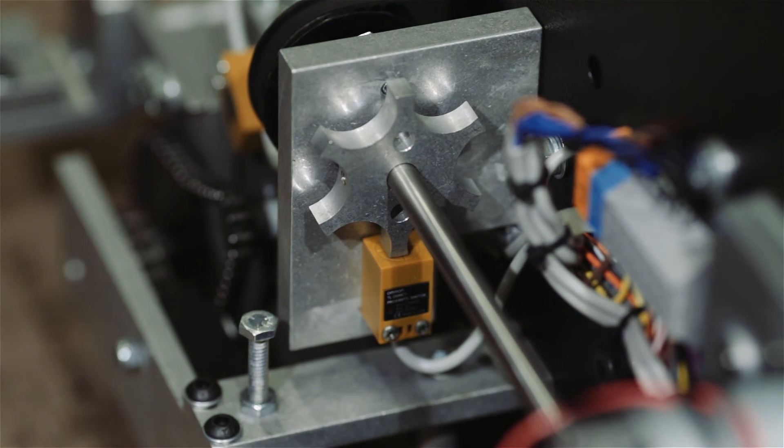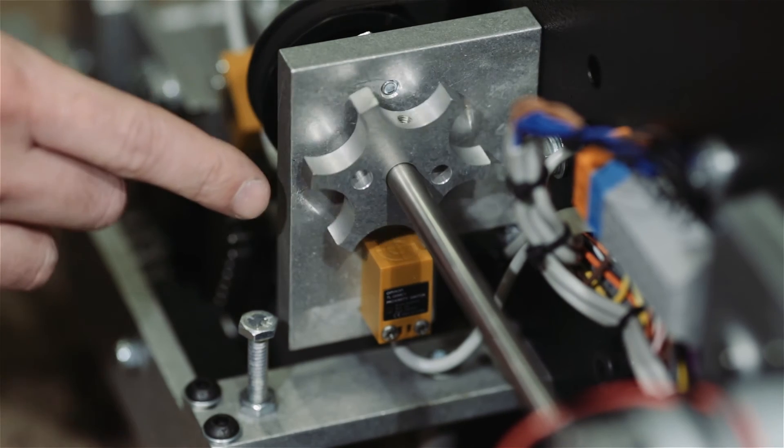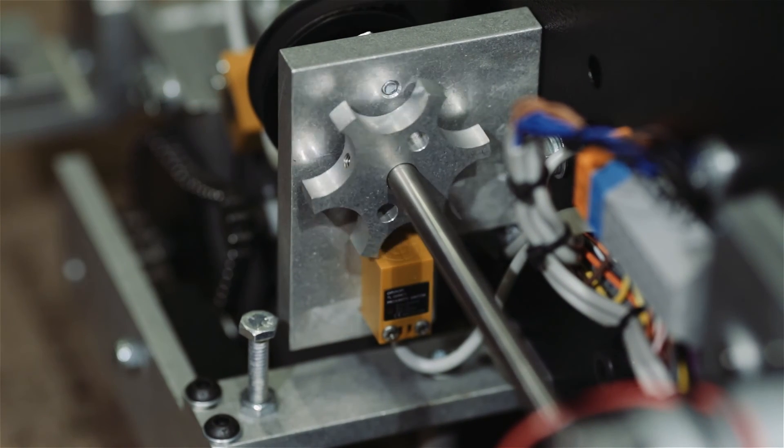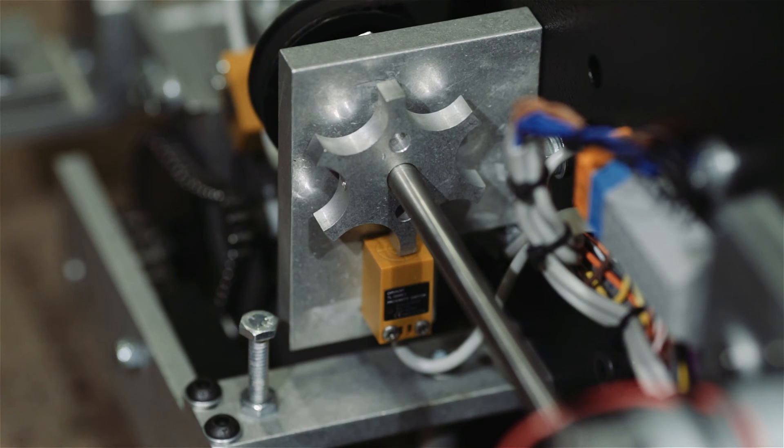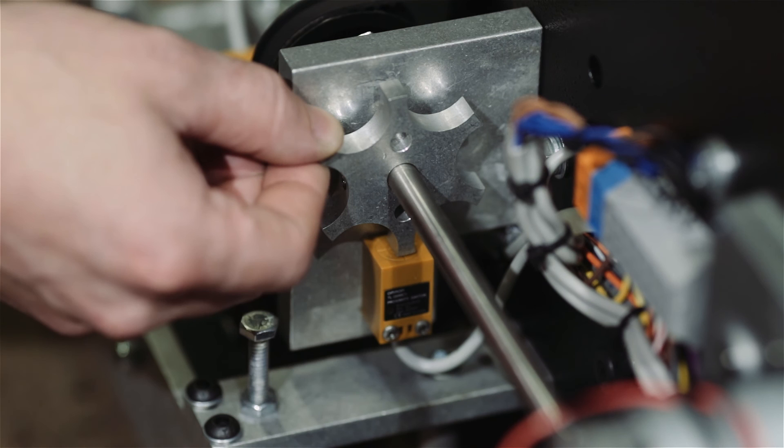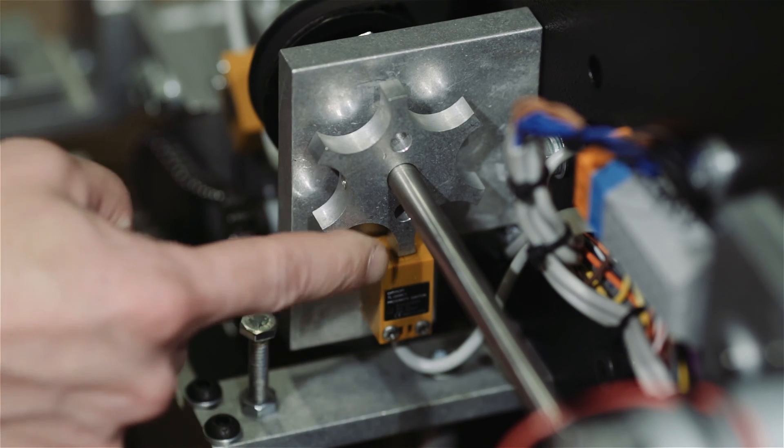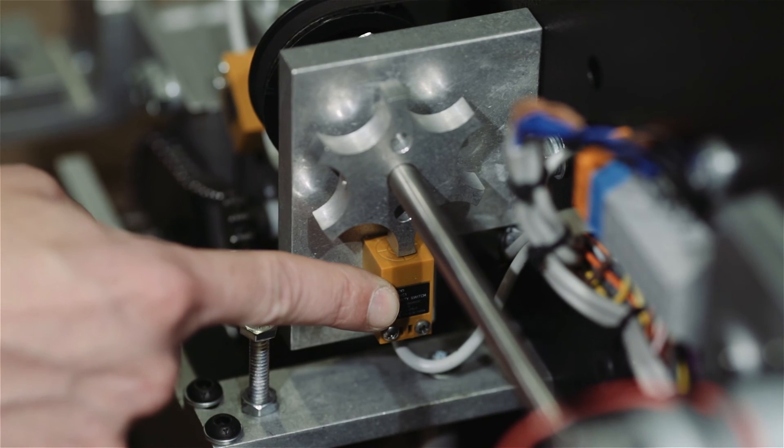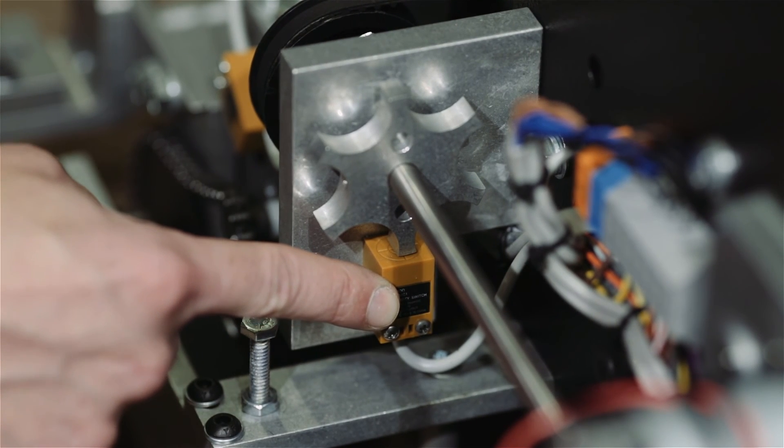If for some reason it is not, there are two set screws in the target that we can loosen. With the head remaining in the center of the machine, turn the target on the shaft until one of the teeth is now directly above the proximity switch, and then we can lock the set screws in place.